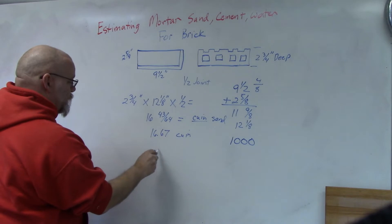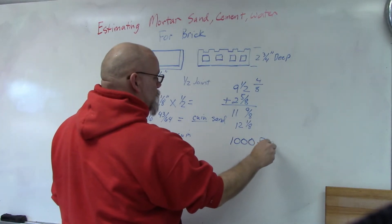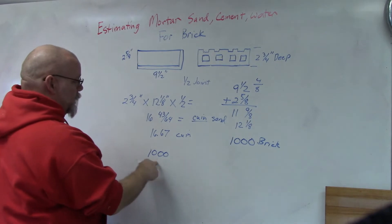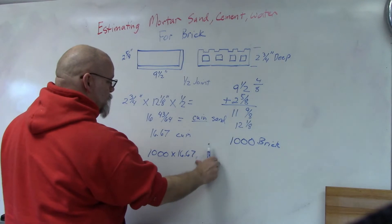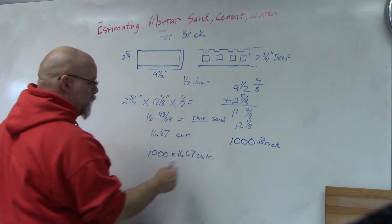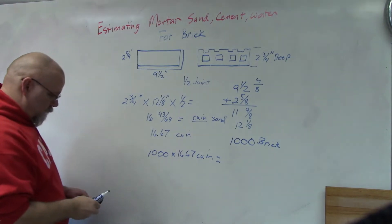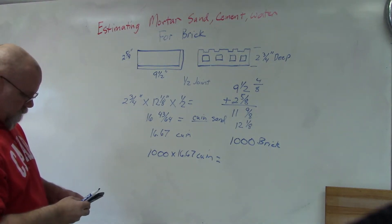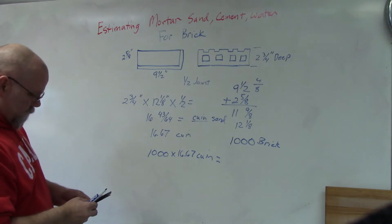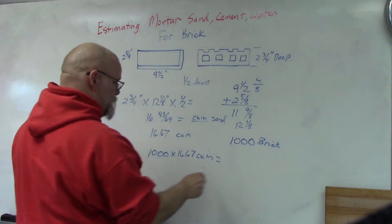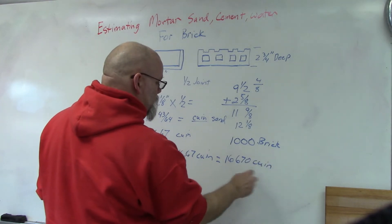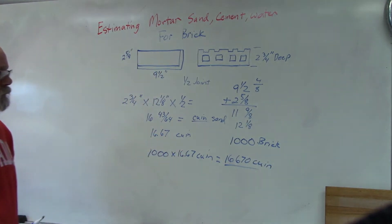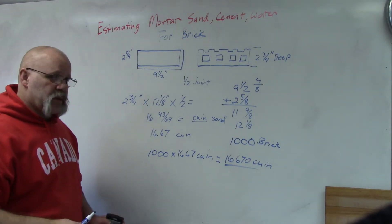Okay, so then I'm just going to take a thousand brick times 16.67 cubic inches per brick, and I will get 16,670 cubic inches.